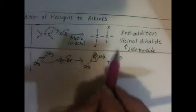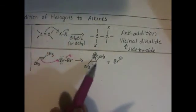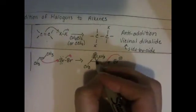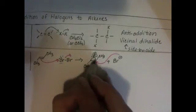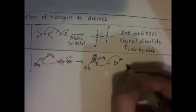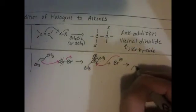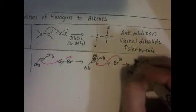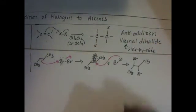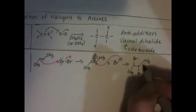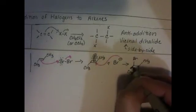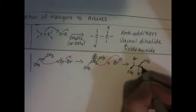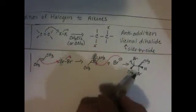The bromide ion then attacks this intermediate and it can attack at this carbon right here. Hits down there and breaks this carbon-bromine bond, moves those electrons up onto the bromine as a lone pair. And we end up getting this product. It looks like that. And we've got this is actually a wedge because it's coming out in front and this is a dash because it's going in the back. And so that means we've got a wedge hydrogen right here and a dash hydrogen right here. Anti addition.